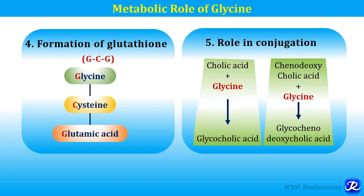The next role of glycine is in conjugation — it acts as a conjugating agent for bile acids. Cholic acid combines with glycine to form glycocholic acid, and chenodeoxycholic acid combines with glycine to form glycochenodeoxycholic acid. So glycine plays a major role in conjugation reactions.